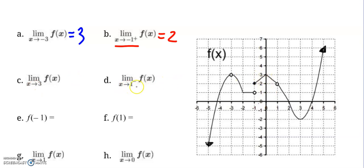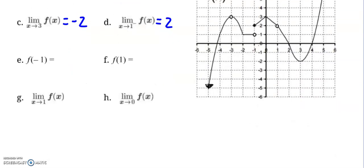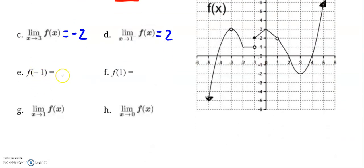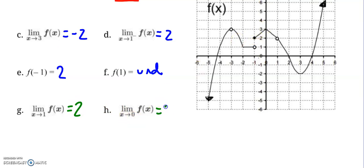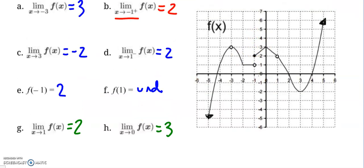As x approaches 1 from the left, the y-value we're approaching is 2. As x approaches 3, looking from both the left and the right, our y-values are approaching negative 2. Please note: this is a completely different question than asking f of negative 1. f(negative 1) is saying what is the y-value when x is negative 1 — the y-value is 2. What is the y-value when x is 1? There is no y-value, so we say the function is undefined. Limits do not exist; functions are undefined — those are different terms. As x goes to 1, both from the left and the right, y-values approach 2. As x approaches 0, y-values from both sides approach 3.